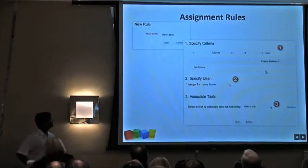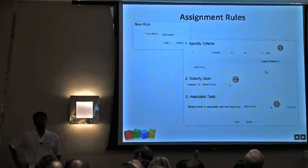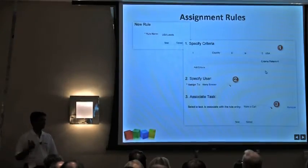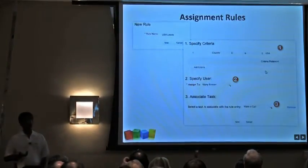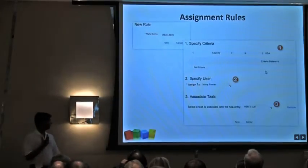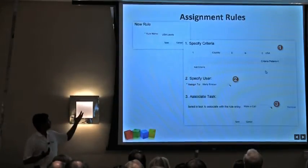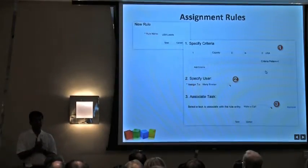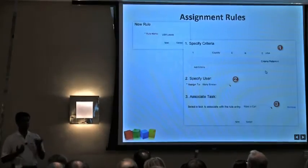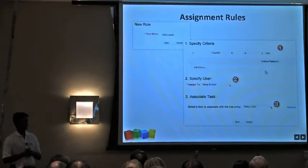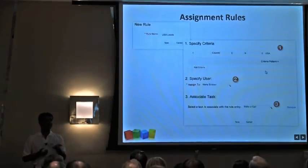Assignment rules are useful for assigning leads and contacts. They're especially helpful when importing large files — say, thousands of leads — distributing them to sales reps automatically. You can specify criteria such as country or region, and based on that, the lead is assigned to the appropriate salesperson — for example, 'Country is USA, assign to Marty Sinclair.' You can also associate a task during the assignment itself, so the system handles both lead distribution and automatic task creation.